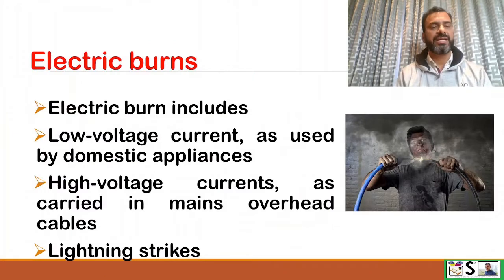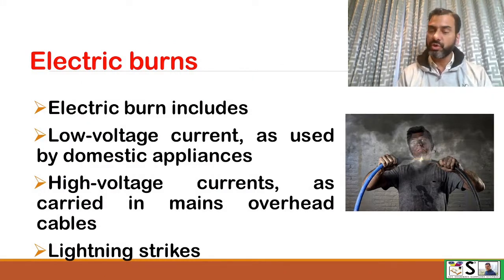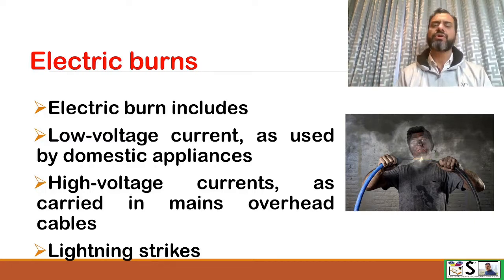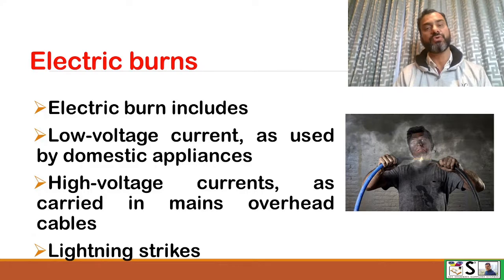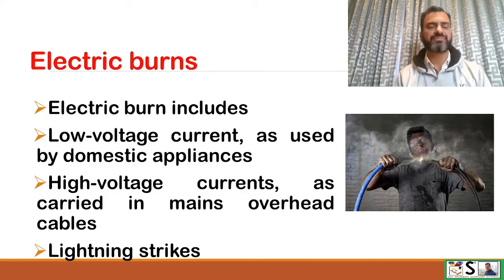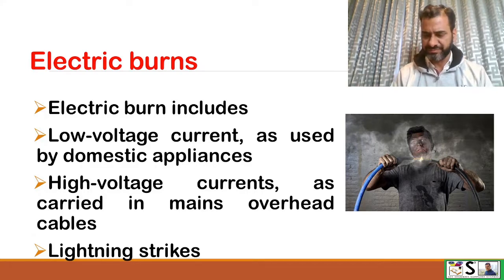Electric burn includes low voltage current as used in domestic appliances, or high voltage current as carried in the main overhead cables, and lightning strikes.